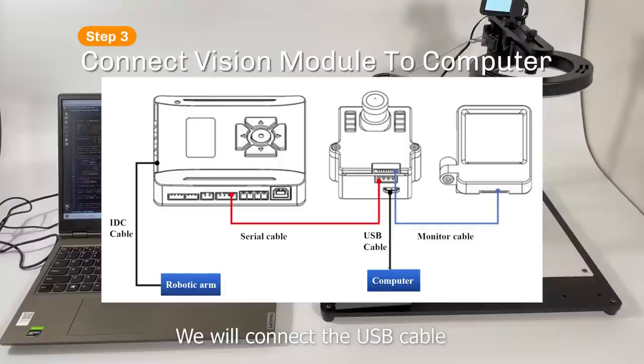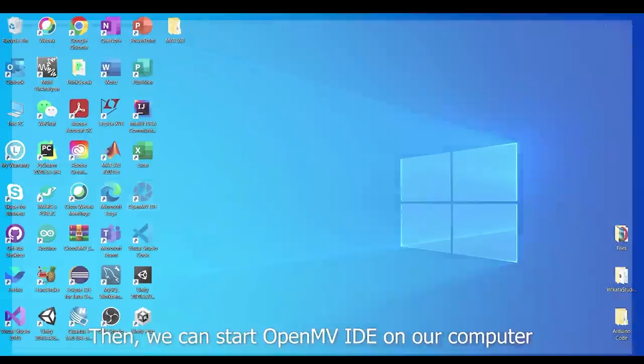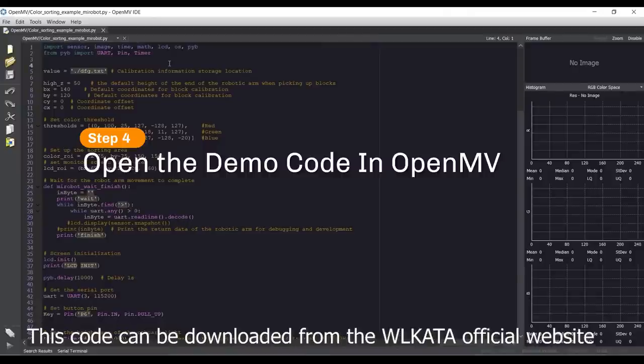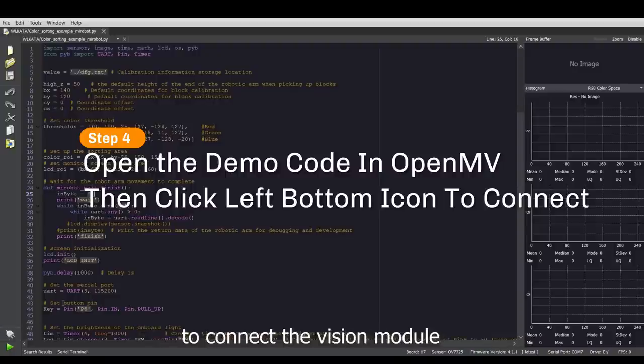We will connect the USB cable from the Vision module to the computer. Then, we can start OpenMV IDE on our computer and open the color sorting code. This code can be downloaded from the Wokata official website. Then, we can click the left bottom icon to connect the Vision module.